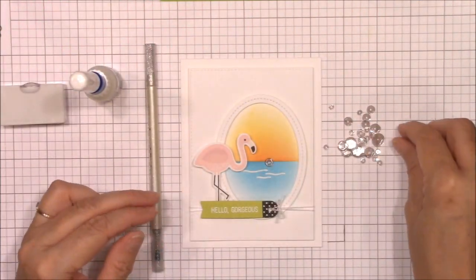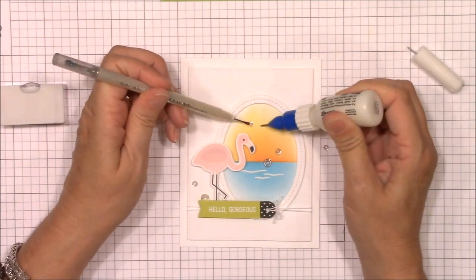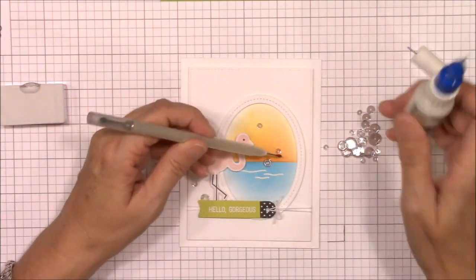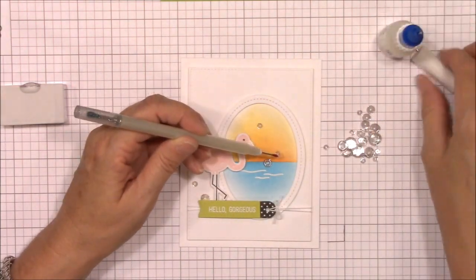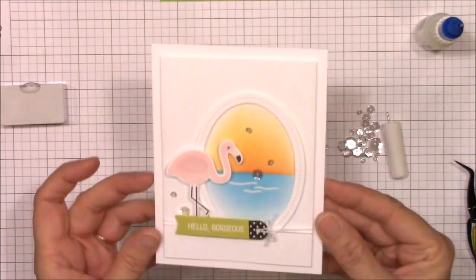As a last and final detail, I've added some sparkling clear sequins with some multi-medium matte adhesive. This liquid adhesive dries clear and matte so it doesn't show if some of your adhesive gushes outside the sequins. I think these add just a hint of sparkle and whimsy to my project, which just makes me happy.